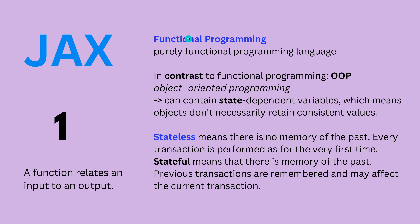In contrast, functional programming is more or less in contrast to what we did up until now. We had object-oriented programming — OOP. In object-oriented programming, this can contain state-dependent variables, which means objects don't necessarily retain consistent values. But we need consistency for massive parallelization. Y cannot change whether I put it on TPU 1 or TPU 8 — Y has to stay Y for the whole cluster. So we cannot go with state-dependent variables or object-oriented programming. Mathematics is gorgeous — we have purely functional programming language, and that's JAX.